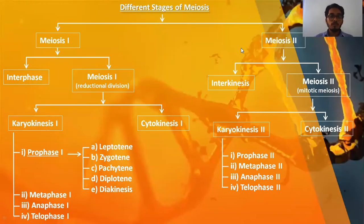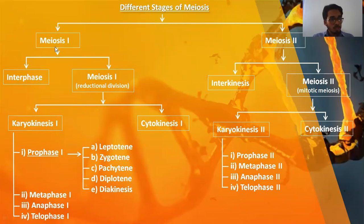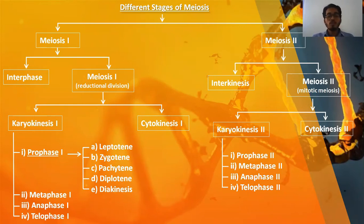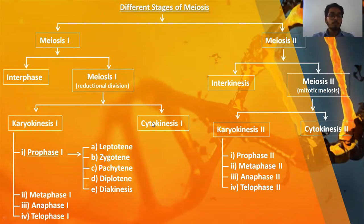Moving on to the concept, let's understand all the different stages of meiosis as a flow chart. The stages are bifurcated into two successive divisions: meiosis one and meiosis two. Meiosis one has two phases — interphase and M phase, which is the reductional division. Interphase has three sub-phases: G1 (gap one), S (synthetic phase), and G2 (gap two).